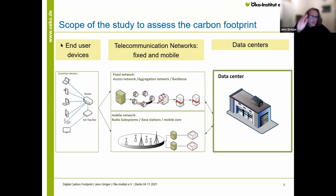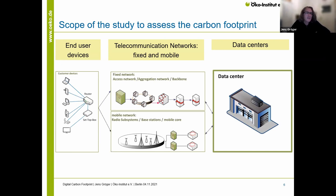The scope of this study to estimate the carbon footprint is that we looked at the end-user devices — all these computers, telephones, routers, and modems which are based at home. They have to be produced and are also consuming electricity in the use phase, so they have two items which produce carbon emissions. Then we have the telecommunication networks — fixed and mobile. Then we have the data center. So in fact, it's four different parts: the production, the use phase of end-user devices, the telecom networks, and the data centers.